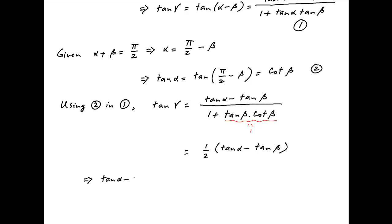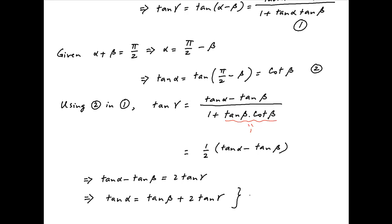Cross-multiplying, we get tan α - tan β = 2·tan γ, and therefore tan α = tan β + 2·tan γ, which is the desired result.